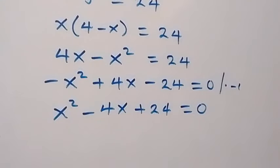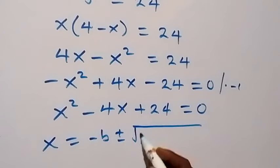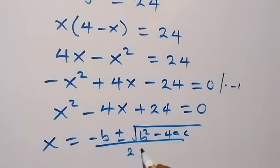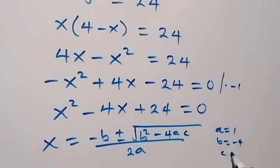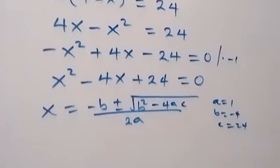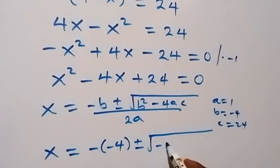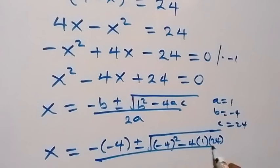From here, we can use the quadratic formula to solve this. We have x equals to minus b plus or minus square root of b squared minus 4ac, over 2a. Here a is 1, so x equals to minus(minus 4) plus or minus square root of (minus 4) squared minus 4 times 1 times 24, over 2 times 1.